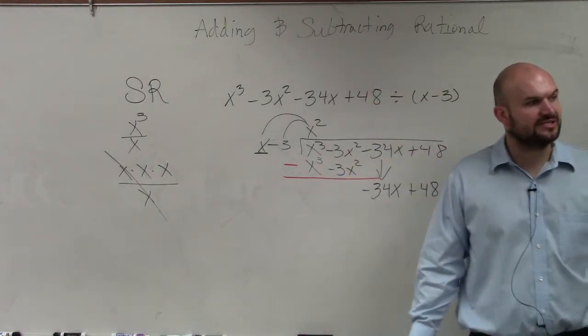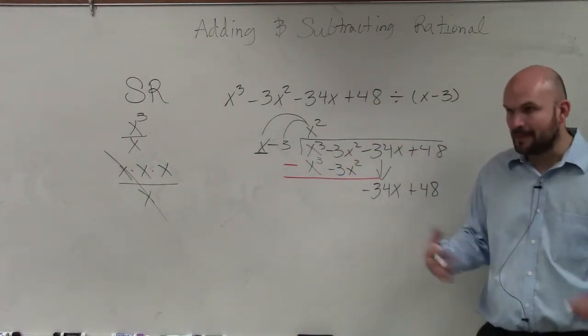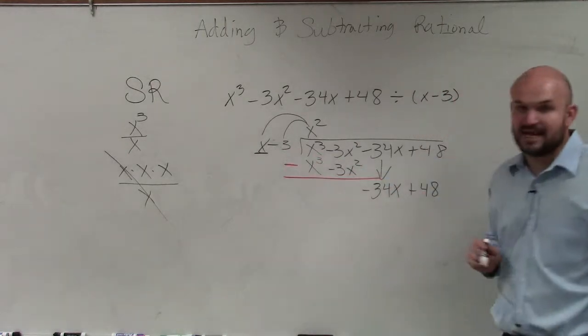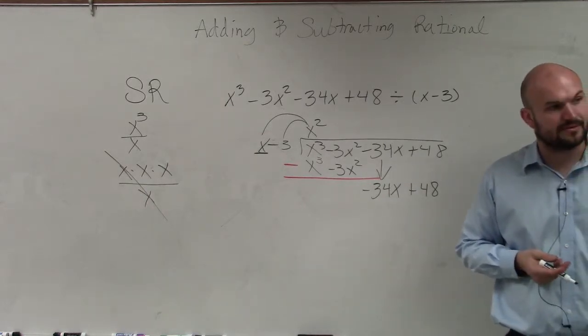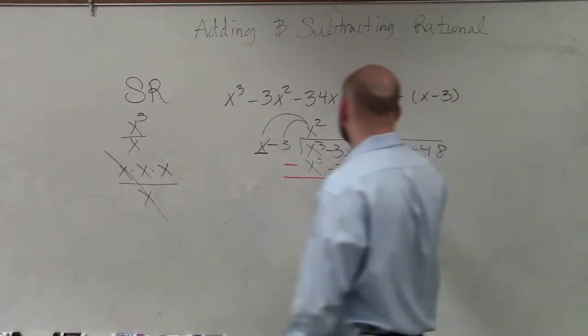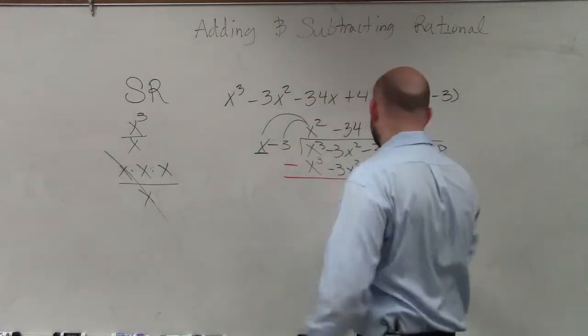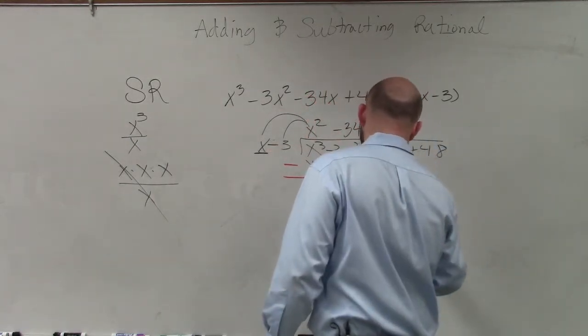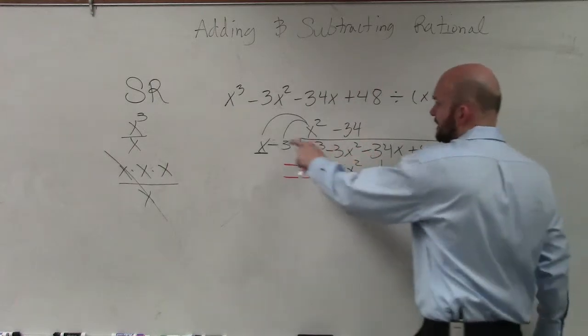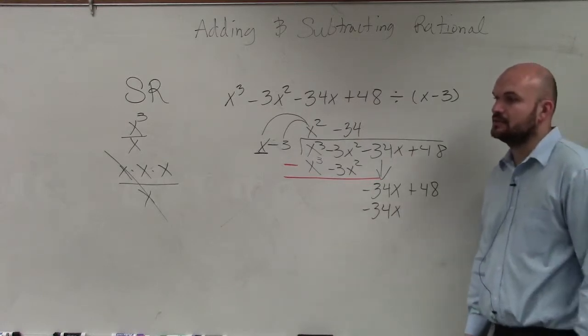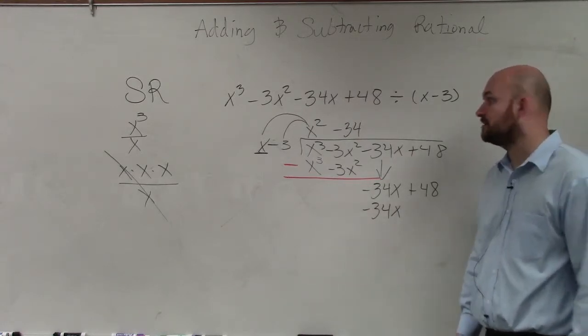So I do x divides into negative 34x how many times? Negative 34 times. Negative 34 times x is negative 34x. Negative 34 times negative 3 is going to give us 30, that would be 68, negative 102.